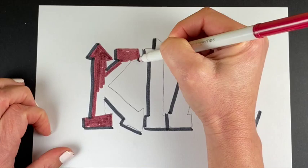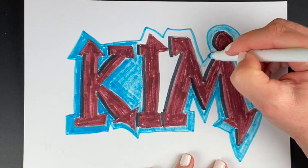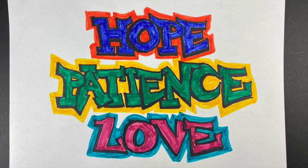To finish it off, we'll add a force field around the letters and color that in. Make your name out of graffiti or choose an inspirational word. You could even try it with sidewalk chalk on your sidewalk.